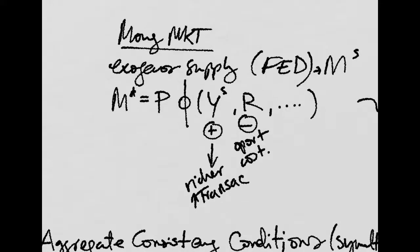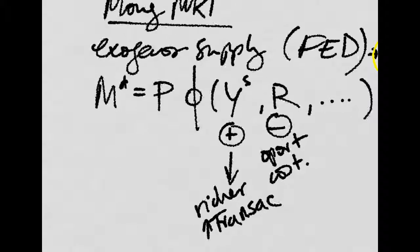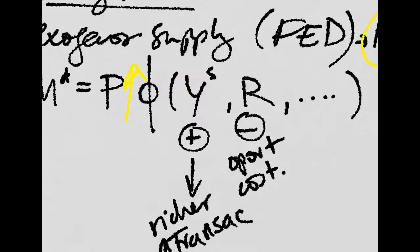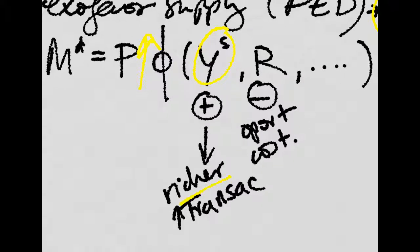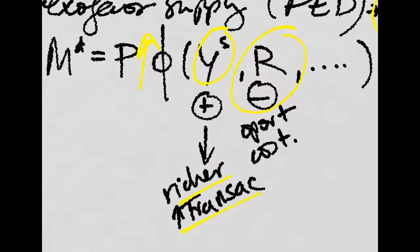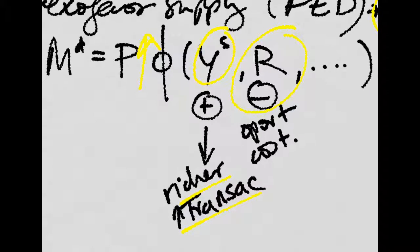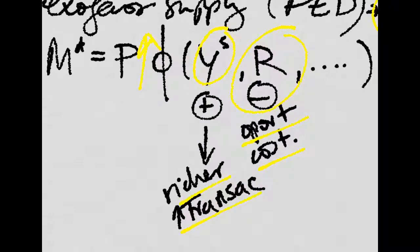Now, if we go to the money market, we have an exogenous money supply given, for example, by the Federal Reserve. Then we have a money demand, which depends positively on prices — because if prices increase, you need more money — and positively on income, because if you are richer, the number of transactions increases. It depends negatively on the interest rate because the interest rate is the return on bonds, and a higher bond return increases the opportunity cost of holding money.